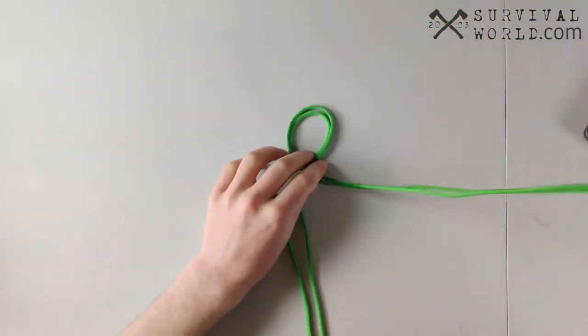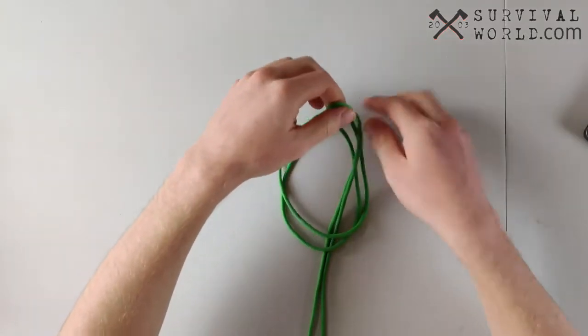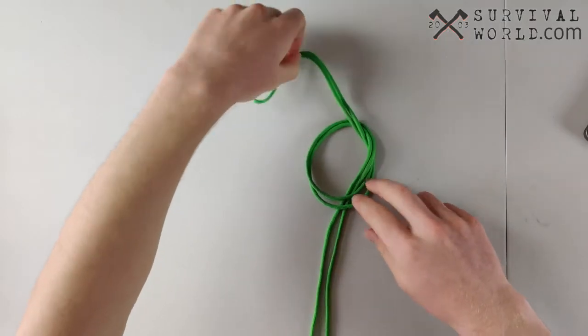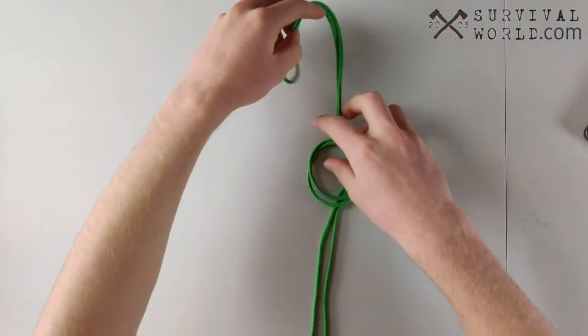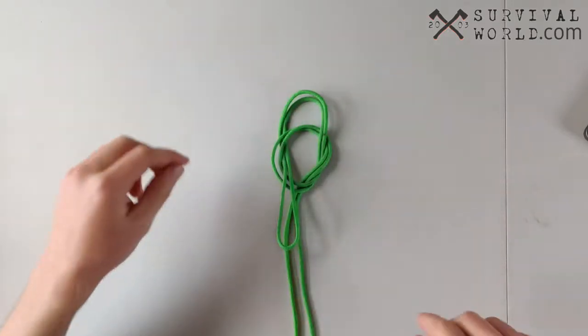So we're going to loop our line around, overhand loop, and we're going to take our end here and stick it up through that overhand loop. Then we're going to spin it around here and actually insert it through that loop from the bottom. Then we're going to stick it around.